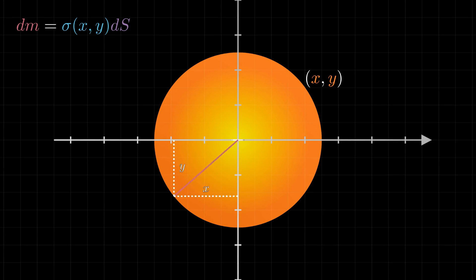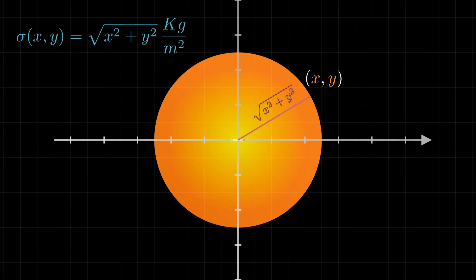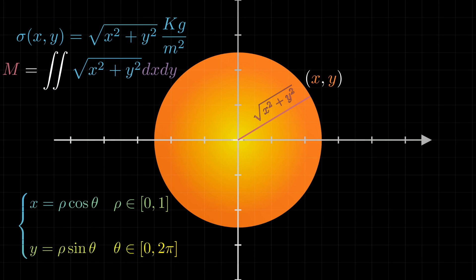Let's put all of this in a reference system, where the origin is the center of the plate. Every point of this plate will have an x and y coordinate, so its distance from the center will be, for the Pythagorean theorem, square root of x squared plus y squared. But since the density on an x-y position depends on this distance, for simplicity we will say that it's equal to this distance, its formula will also have that expression.